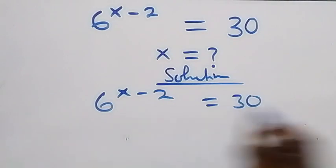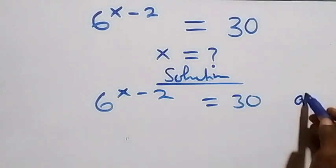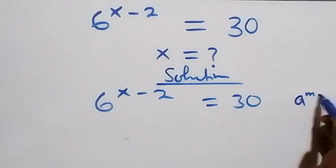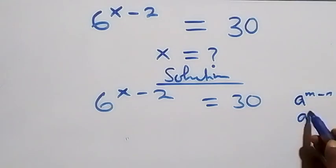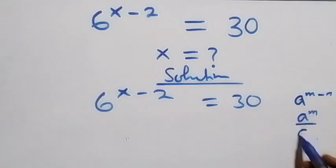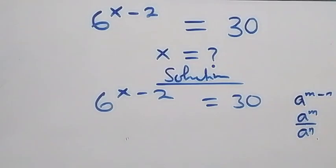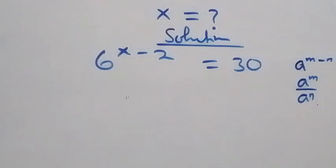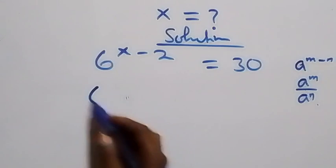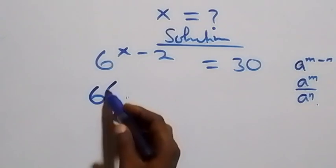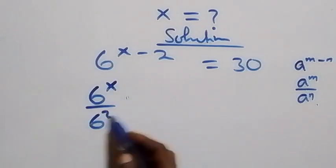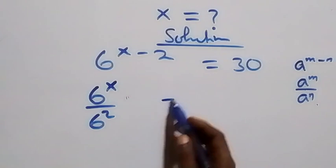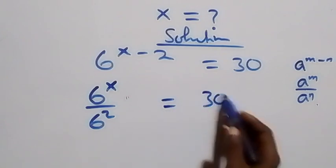This follows from when we have a raised to power n minus n, which is the same thing as a raised to power n over a raised to power n. That is, the same thing as 6 raised to power x over 6 squared equals 30.